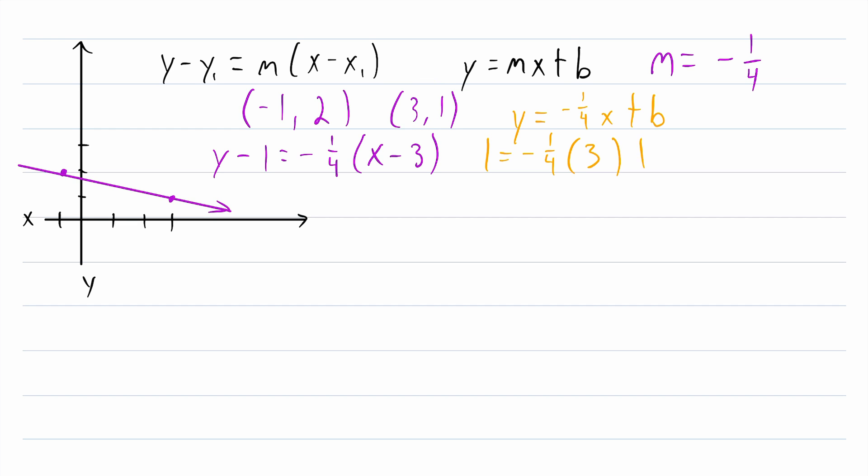And again, we can do this because we know this point is on the line. So we know it makes this equation true. Now the only variable we have in this equation is b. So let's just solve for b. Carrying out this multiplication, we have that 1 is equal to negative 3/4 plus b. Then we'll add 3/4 to both sides. We have 1 plus 3/4 is equal to b.